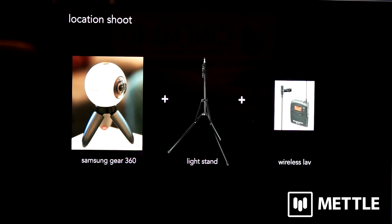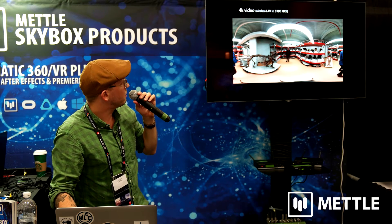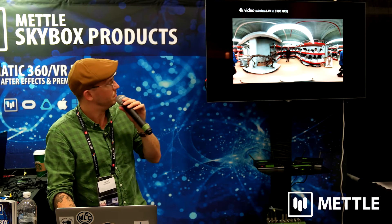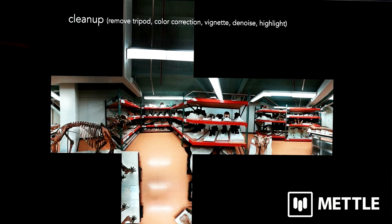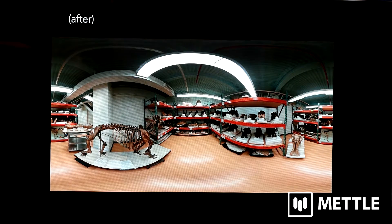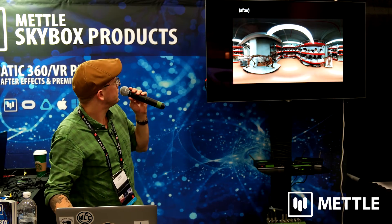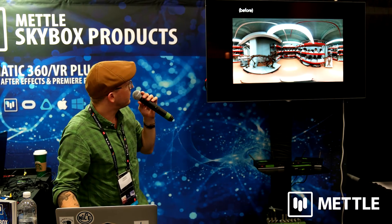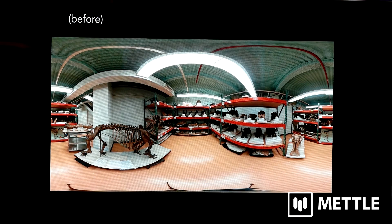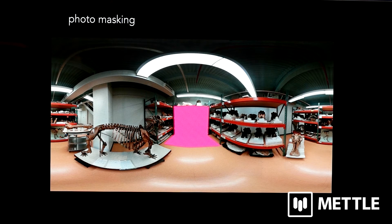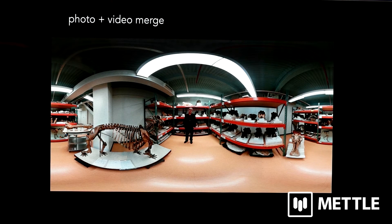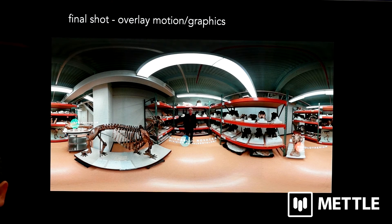We set it up shooting an 8K photo as a template, then shot the 4K video in the same angle, cleaned up the photo, converted it to a cube map, and removed the tripod. This is the final backplate — an 8K still. I added some vignetting and denoising. So you have a really clean 8K backplate, and then in After Effects you mask the area where the video was shot and pop in the video, because you have really high resolution in the backplate. If I had been using video in the backplate, it would not have been as detailed.